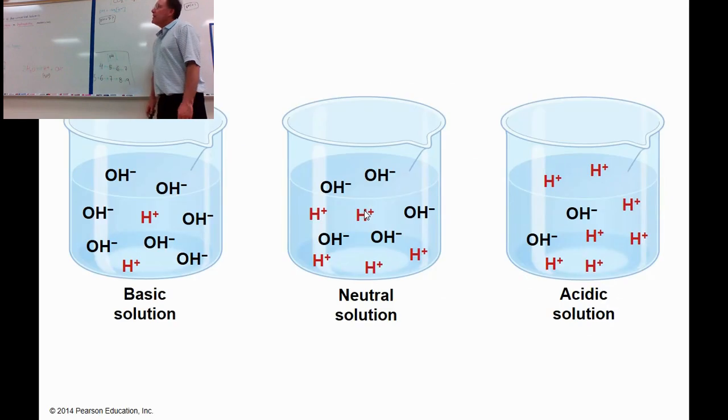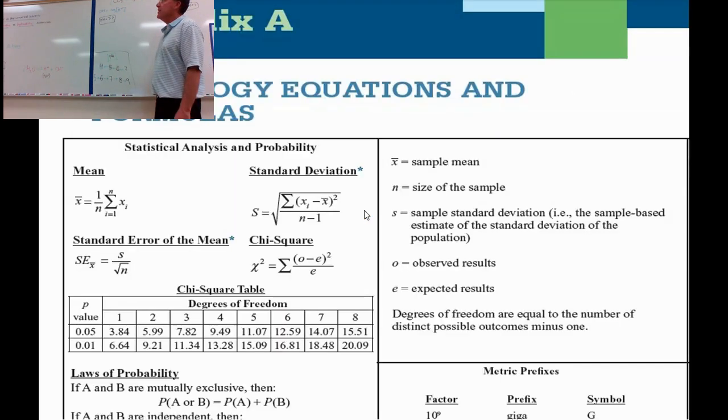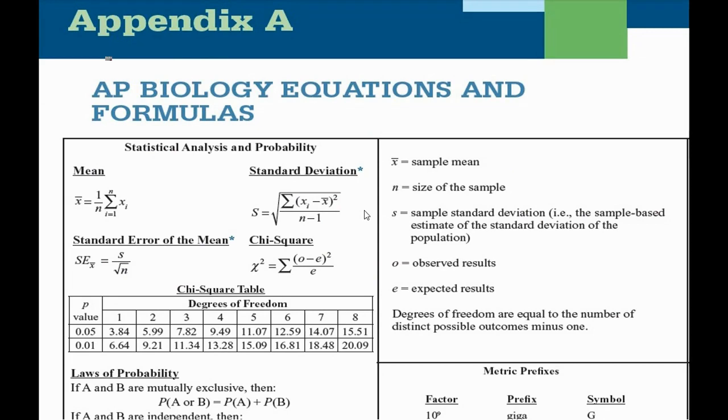You're going to have to know a little bit about this for the test, and so here's our little pictures of the basic solution with more OHs than H+, and then you can see the acidic solution with more hydrogen ions than OH negatives or hydroxide ions. Here's our—I don't know if I've had class with you yet, but I'm just taping this in July, so I will have already given you this sheet or not, but you have to understand that on the AP Biology test in May, they're going to give you this form, and any one of these formulas are fair game for you to use and be held accountable for during the exam.